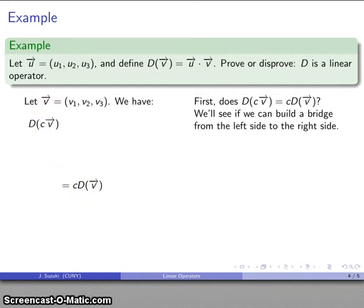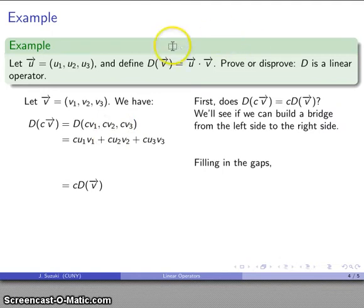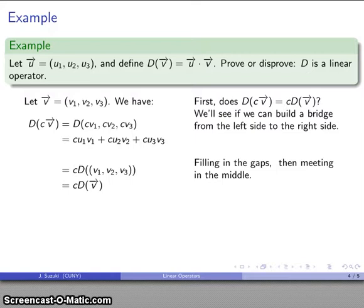Let's go ahead and fill in the gaps. We have our definition: c times vector v, well that's a scalar multiple of this vector v, so I know that's going to be (cv₁, cv₂, cv₃). My definition says D applied to any vector v is going to be the dot product of that vector with u, so I'll find the dot product of this vector with this vector.